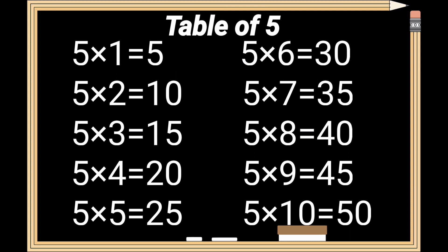Table of 5 review. 5 times 7 is 35. 5 times 8 is 40. 5 times 9 is 45. 5 times 10 is 50.